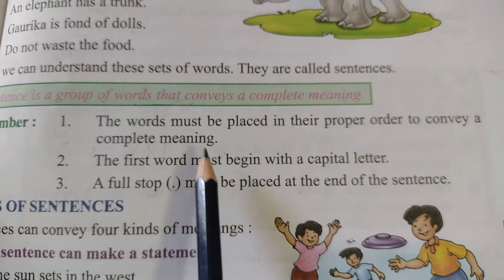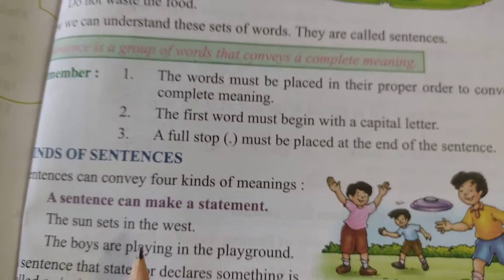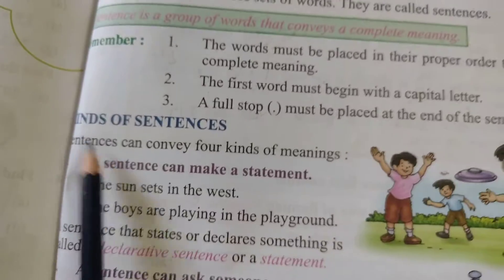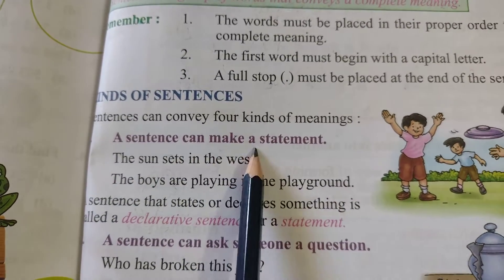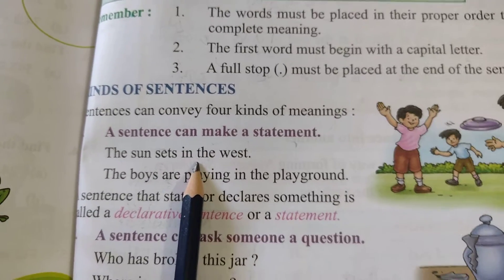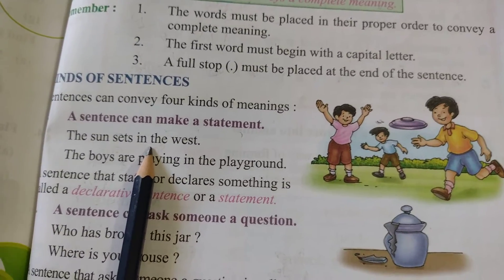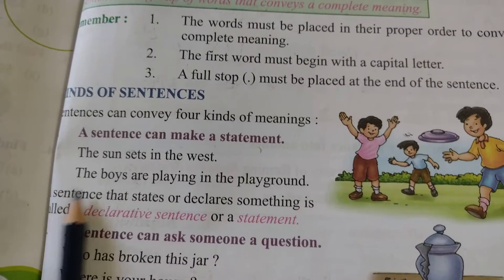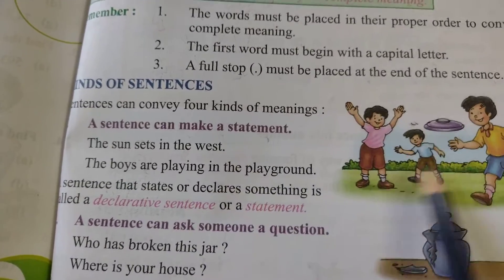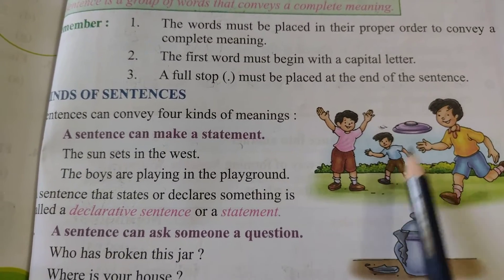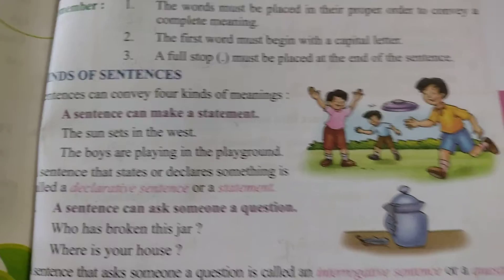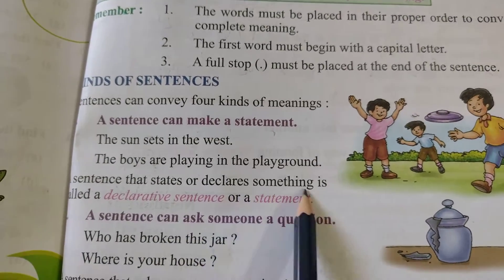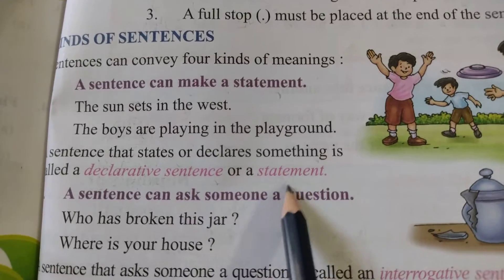Now, how many kinds of sentences are there? Sentences can convey four kinds of meanings. A sentence can make a statement — for example, the sun sets in the west. There is no change in the statement that the sun always sets in the west. Next: the boys are playing in the playground. Seeing the picture where they are playing, we can say exactly that they are playing in the playground. A sentence that states or declares something is called a declarative sentence or a statement.